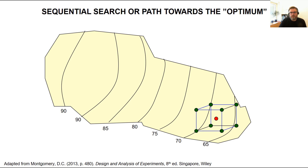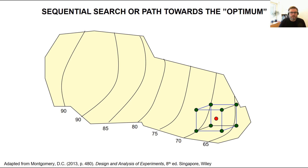Assume that in our first experiments we use a factorial design in three factors with center points. We start in an area between response values of 65 and 70. The model we fit from this first experiment tells us which factors are active and also provides a path along which we can assume the response will increase. This path is called the path of steepest ascent because we are trying to maximize the response.